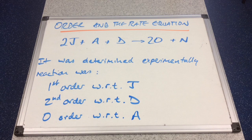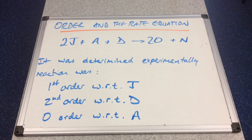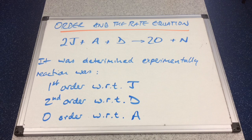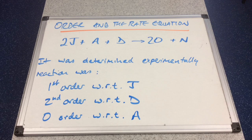In this video I'm going to look at order and the rate equation. I've made up a reaction: 2 moles of J reacting with a mole of A and a mole of D, and that goes on to make 2 moles of O and a mole of N.